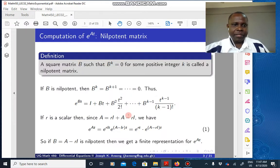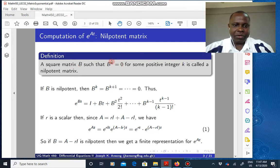So what is a nilpotent matrix? If you have a square matrix B such that B raised to the power K is equal to zero, where K is some integer, then the matrix B is said to be nilpotent. We'll see why that is important.